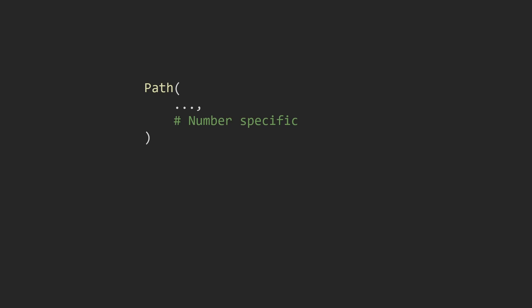Now we'll get into some number-specific validations. First we can use gt, which stands for greater than, to make sure our number is greater than a certain value — so gt equals 0 means whatever number we pass in has to be greater than zero. We can also use ge, which stands for greater than or equal to — so ge equals 1 means any number we pass in has to be greater than or equal to one.